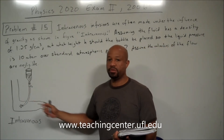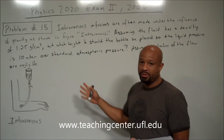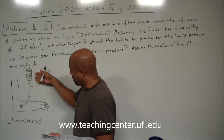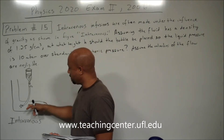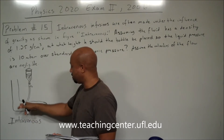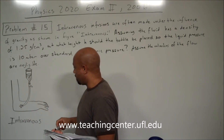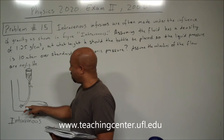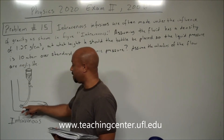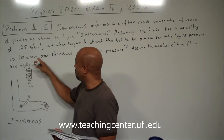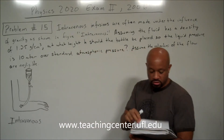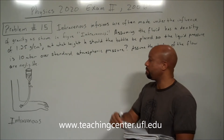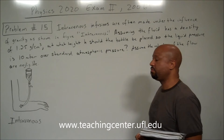I have the intravenous figure reproduced here as best I could with the drawing. We have basically an intravenous bottle and the fluid is being delivered intravenously into someone's arm. We're trying to find at what height to place this bottle so that the pressure at the entrance into the arm is 10 millibars over standard pressure. This comes down to Bernoulli's principle.